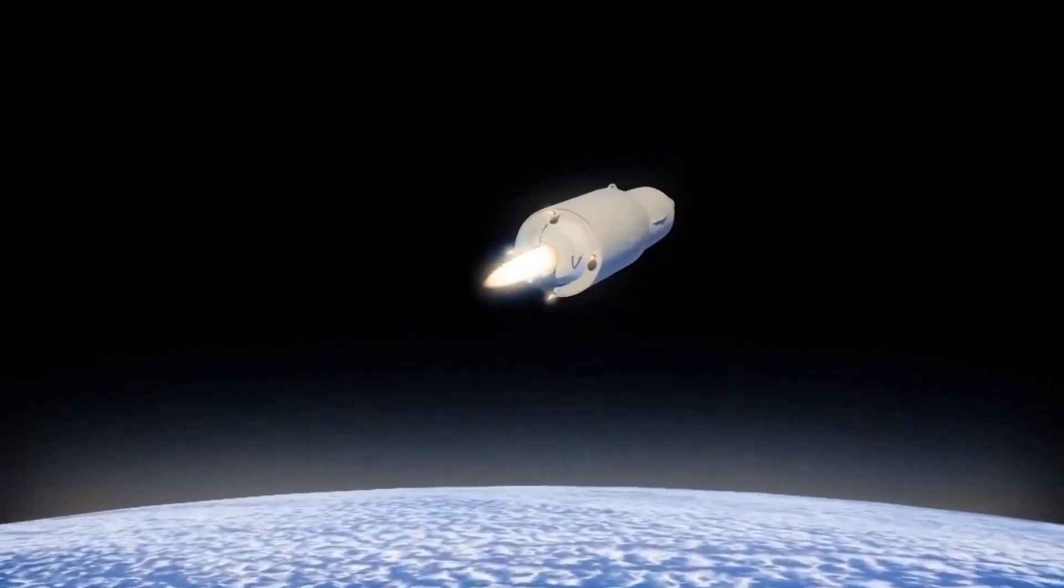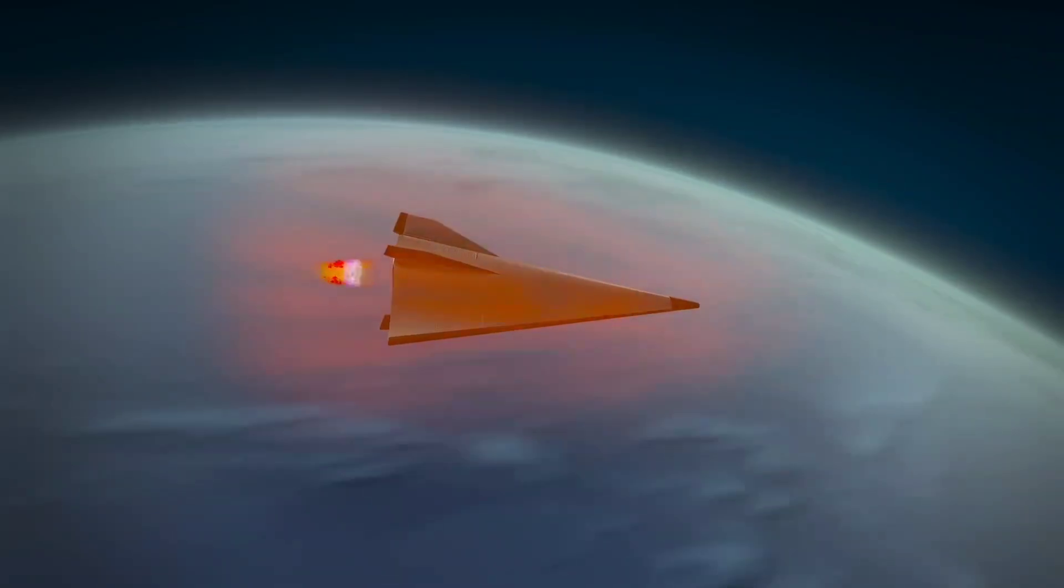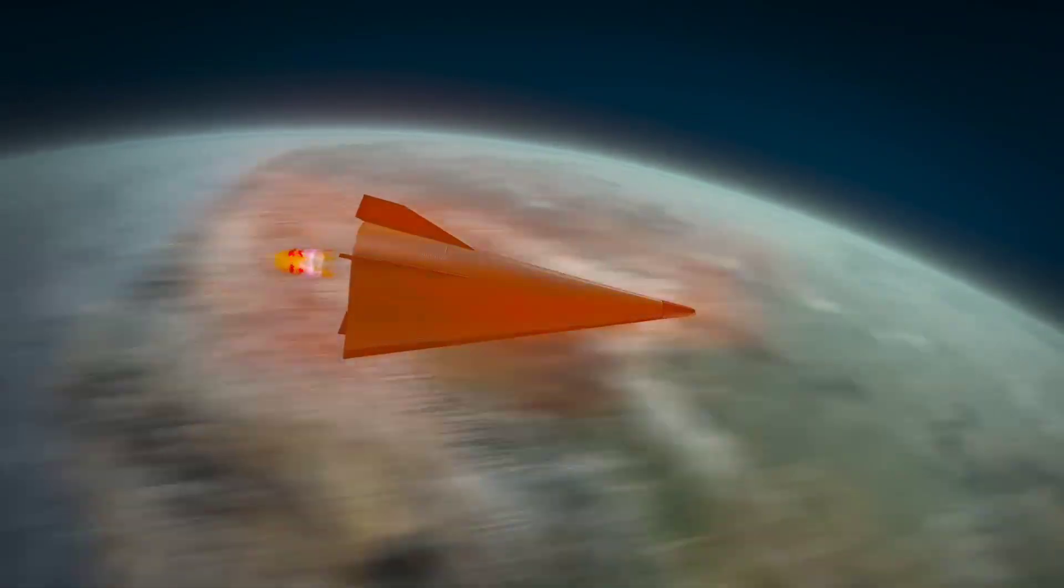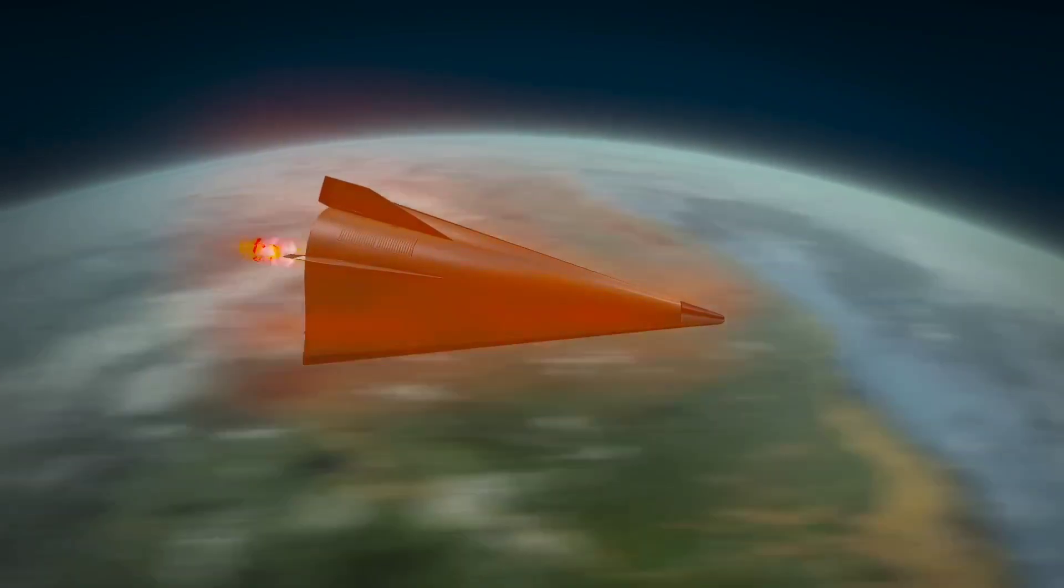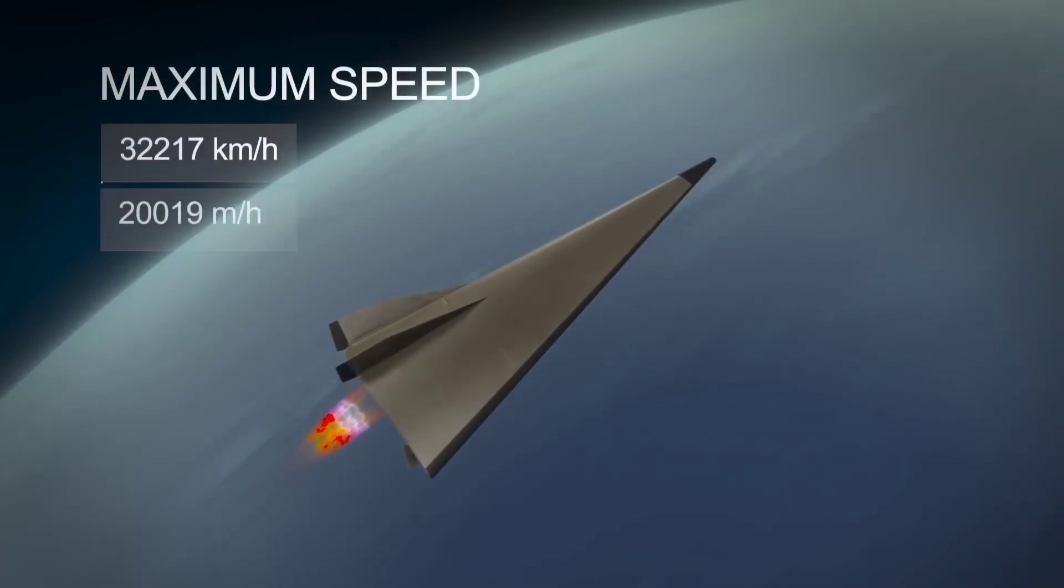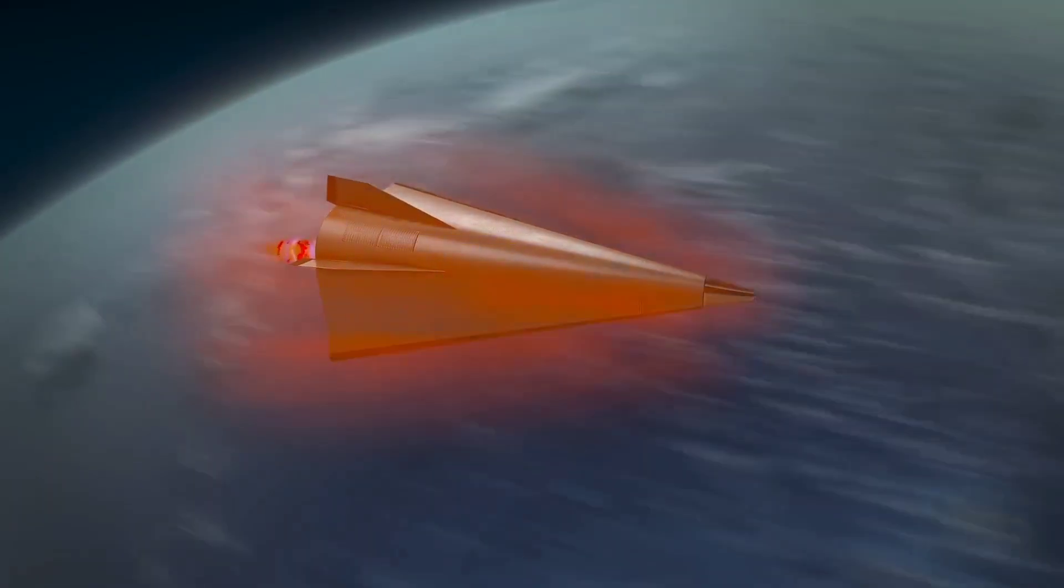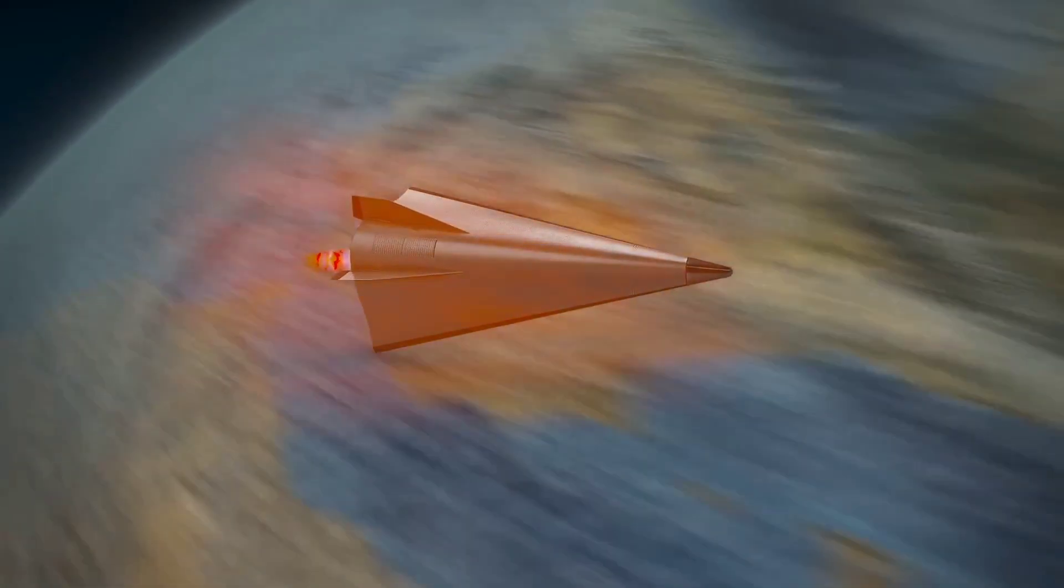Once boosted into near space, the glide vehicle detaches, descending toward its target at speeds that can reach an astonishing Mach 27, which is nearly 33,000 kilometers per hour. But speed alone isn't what makes Avangard terrifying.